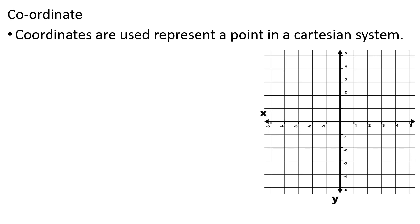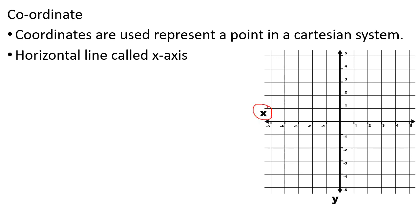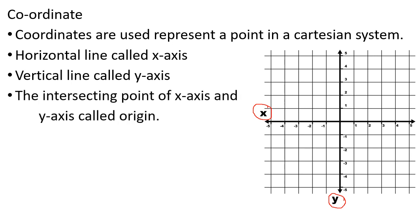Coordinates are used to represent a point in a Cartesian system. The horizontal line is called the x-axis. The vertical line is called the y-axis. We are going to show the 2 axes. Each axis is called the origin — this is the center.